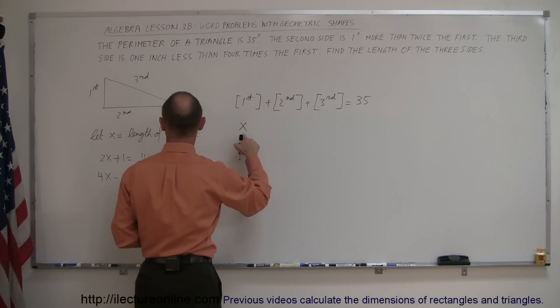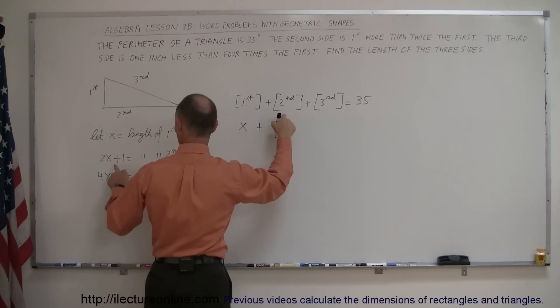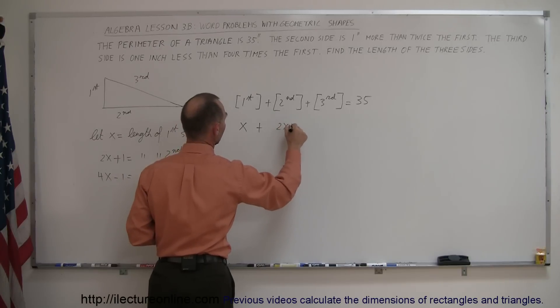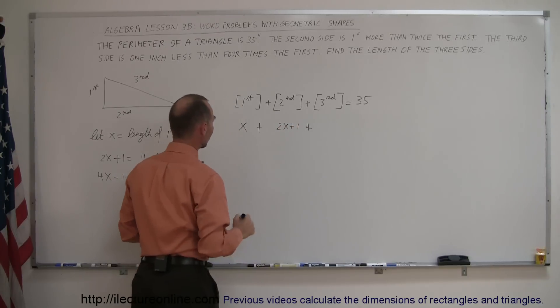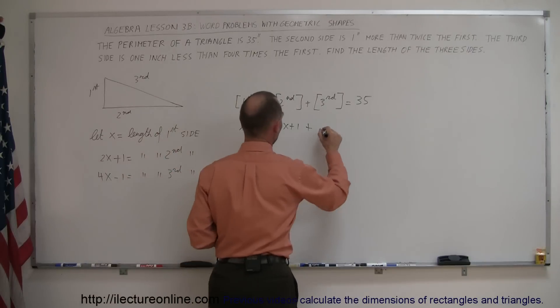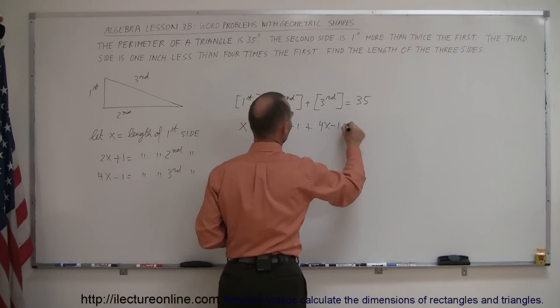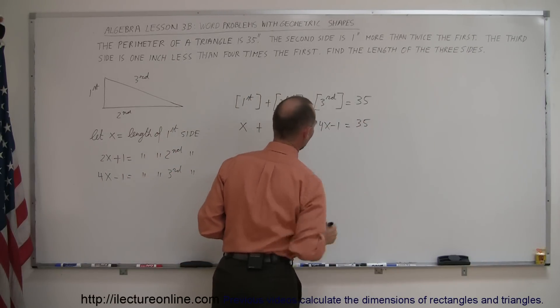So x is the length of the first side plus 2x plus 1, the length of the second side plus 4x minus 1, length of the third side, and that adds up to the perimeter.